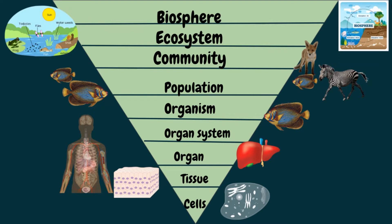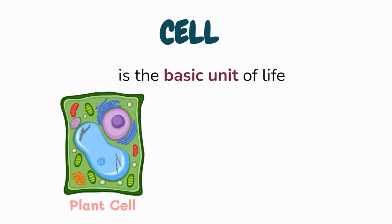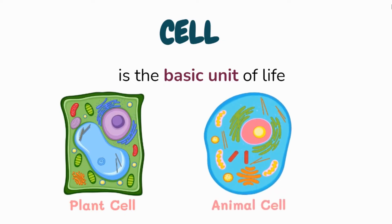Since life is a broad topic, scientists break it down into several different levels of organization to make it easier to study. These levels start with the smallest unit of life and work up to the largest and most broad category. Let's start with the cells. Cell is the smallest unit of life. There are two types of cell: plant cells have cell walls constructed outside the cell membrane and composed of cellulose molecules. Animal cells are typical of the eukaryotic cell, enclosed by a plasma membrane and containing a membrane-bound nucleus and organelles.